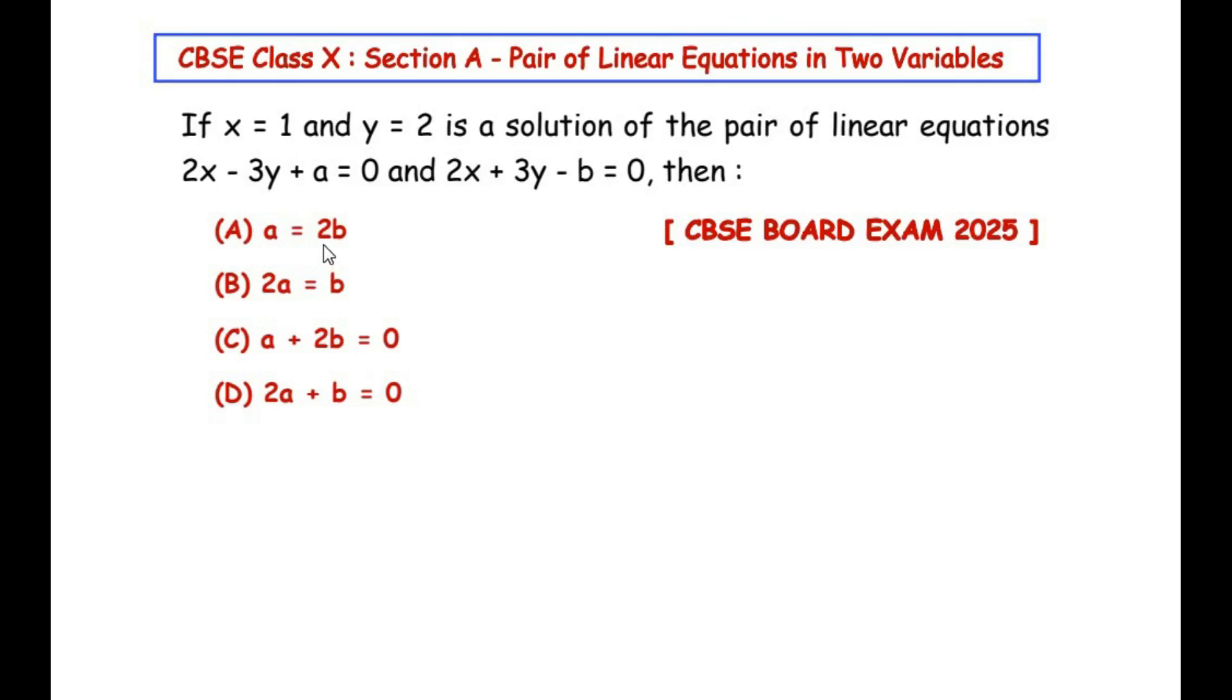We can see that four options are given and all the four options are kind of relationship between a and b. So basically in this question we have to consider these two equations, plug in the values of x and y, find out the values of a and b, and see which of the option is correct. So let us begin by considering the given equations.